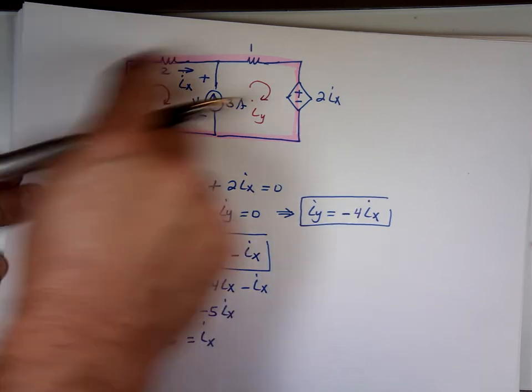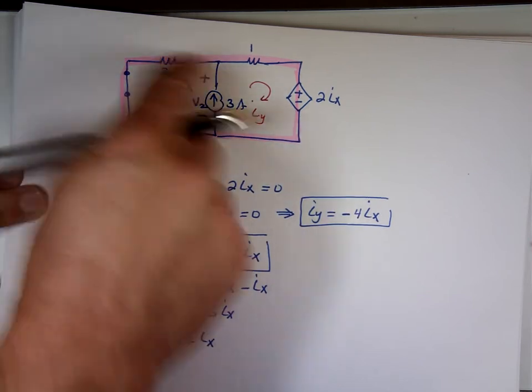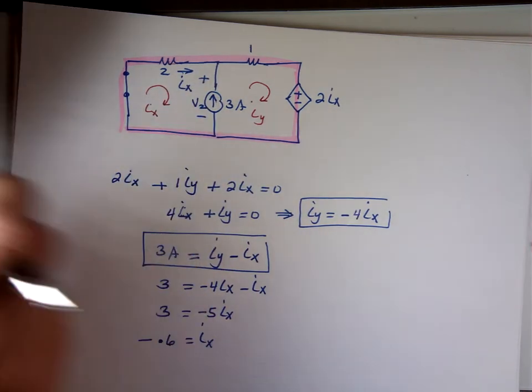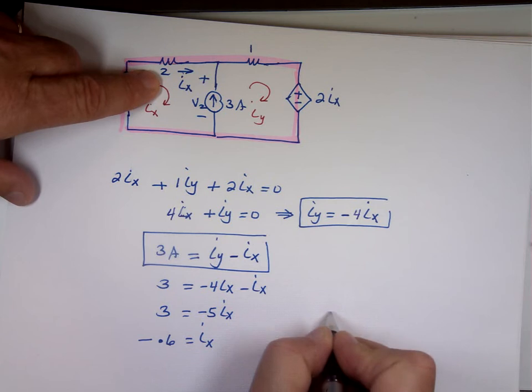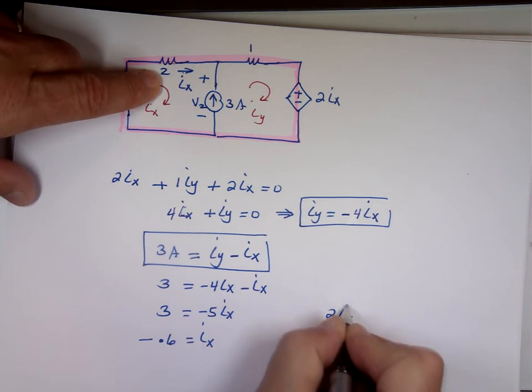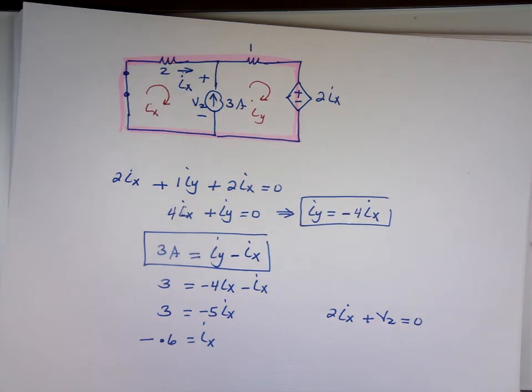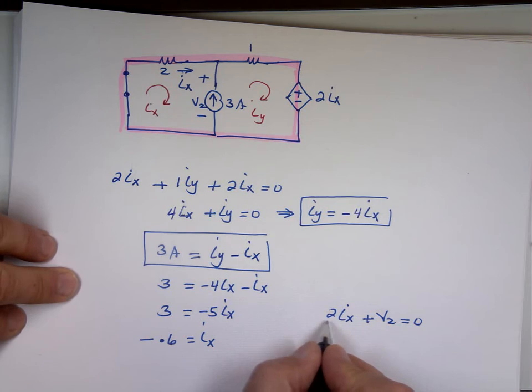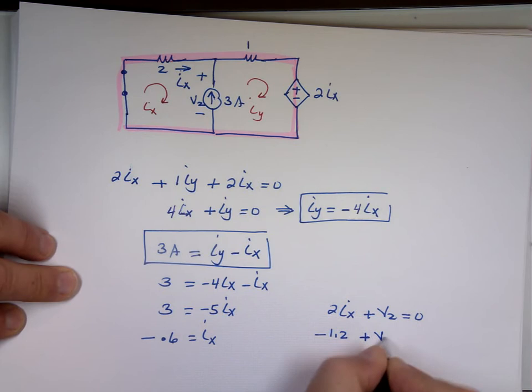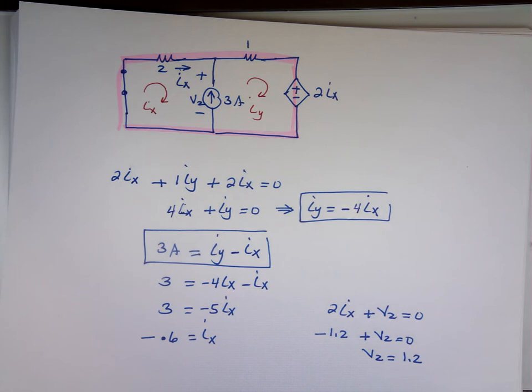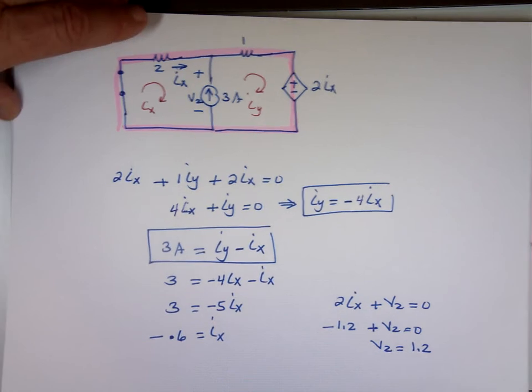Again, if I do KVL right here, in this loop or that loop, doesn't really matter. If I do this loop here, it says 2 times i sub x plus V2 is equal to 0. That's V2, that's how we define it. 2 times negative, that's negative 1.2. Plus V2 is equal to 0. What is V2 equal to? 1.2.